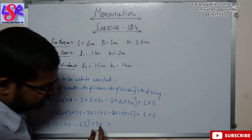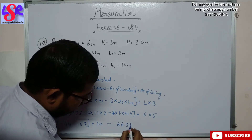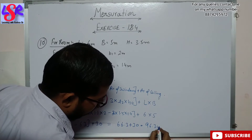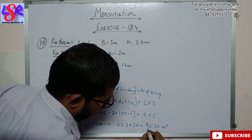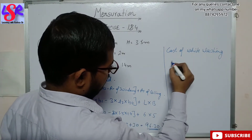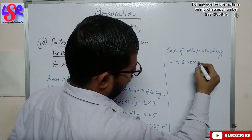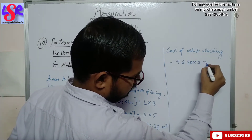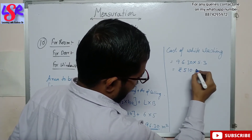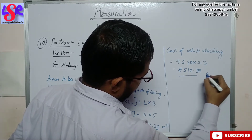Solving this we get 96.30 square meters. Now the cost of whitewashing is 96.30 into 5.3, which equals rupees 510.39 as the answer.